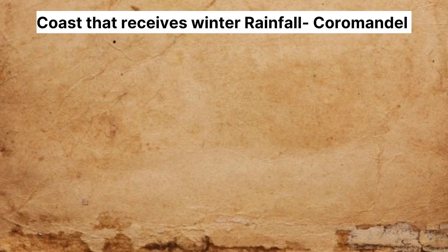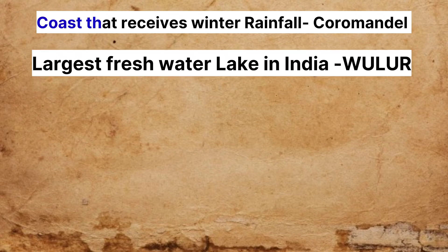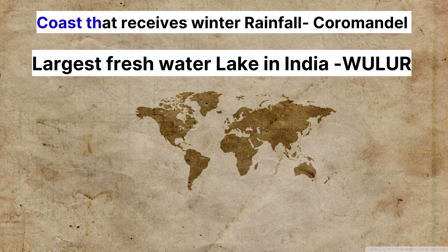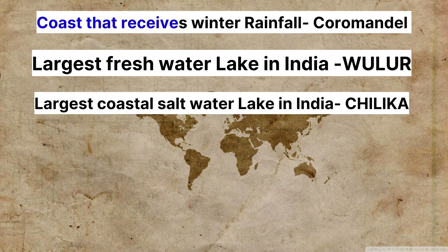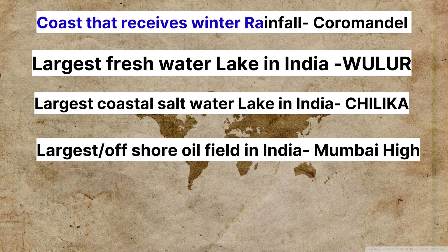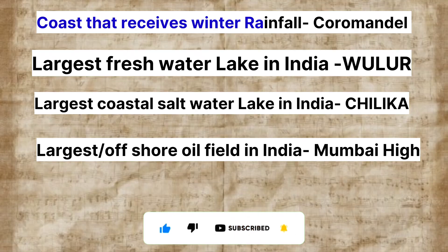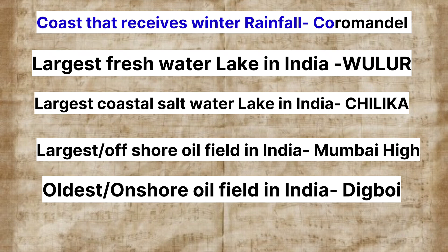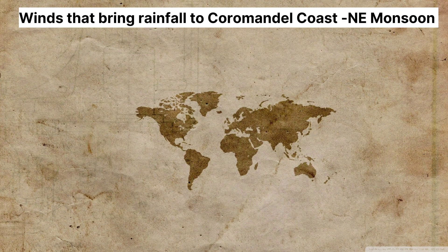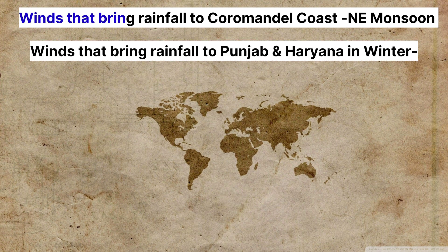The coast that receives winter rainfall is the Coromandel Coast. The largest freshwater lake in India is Wular Lake. The largest coastal saltwater lake in India is Chilika Lake. The largest offshore oil field in India is Mumbai High. The oldest onshore oil field in India is Digboi. The winds that bring rainfall to the Coromandel Coast are the Northeast monsoon winds. The winds that bring rainfall to Punjab and Haryana in winter are Western disturbances.